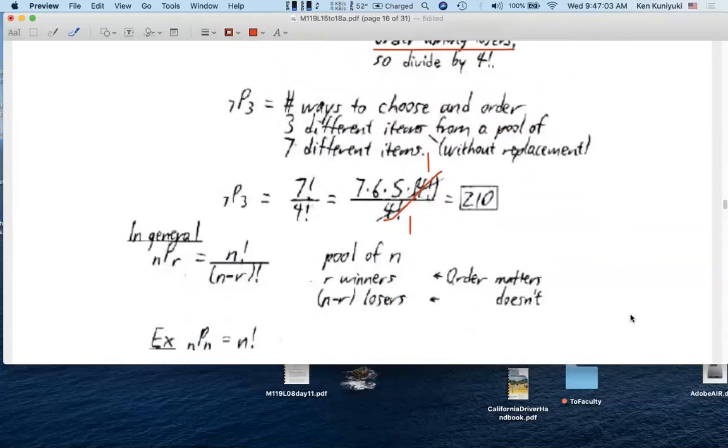The general formula goes like this. nPr, where r is no more than n, integer. It's equal to n factorial, the number of full permutations of the n runners, divided by n minus r, all factorial. If there are r winners, there are n minus r losers, and we don't care about their order.